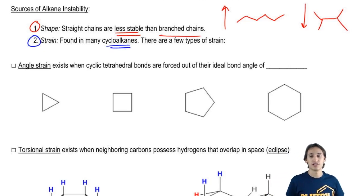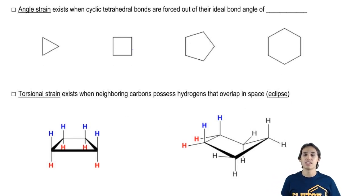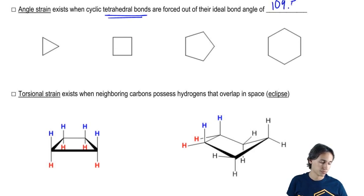A lot of these are found in cycloalkanes. The first one is angle strain. Angle strain exists when tetrahedral bonds are forced out of their ideal bond angle of 109.5 degrees.